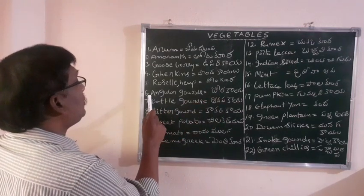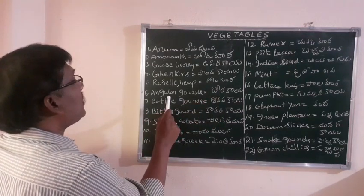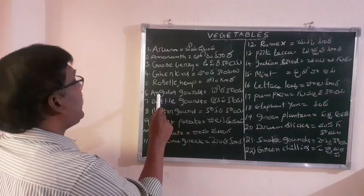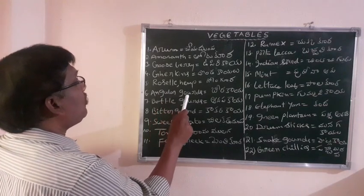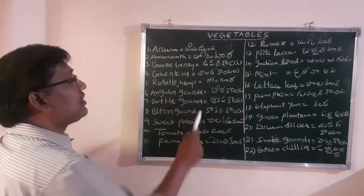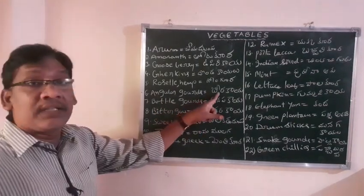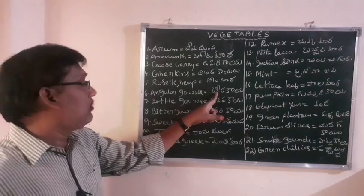Sixth word: Angular Gourd. A-N-G-U-L-E-R G-O-U-R-D-S. Angular gourd means beerakaya.